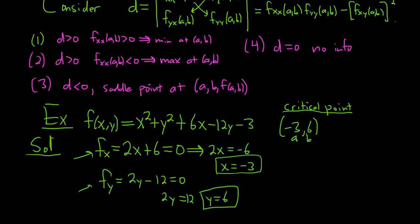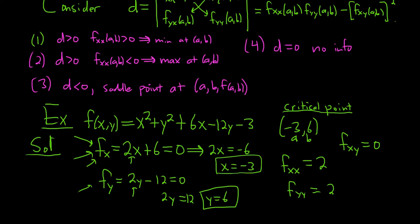Now we compute the second partials. f_xx = 2, since the derivative of 2x is 2. f_yy = 2, since the derivative of 2y is 2 and the rest is zero. The mixed partial f_xy = 0, and likewise f_yx = 0. We expected that because everything is continuous, so they should be the same.